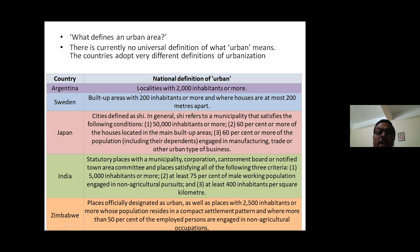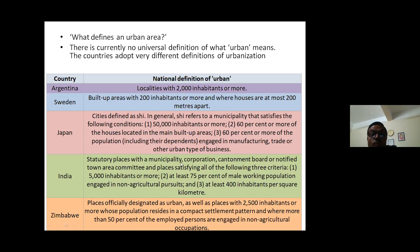In Argentina, it's defined as localities with 2,000 inhabitants or more. In Sweden, it's slightly different — 200 inhabitants and where the houses are 200 meters away. In Japan, it is called a SHI, where it is defined as 50,000 inhabitants or more, with 60% or more houses located in the main built-up areas. And in my country, India, it is statutory places with a municipality corporation, cantonment board or notified town area, satisfying three criteria: 5,000 plus inhabitants, 75% of male working population engaged in non-agricultural practices, and at least 400 inhabitants per square kilometer.